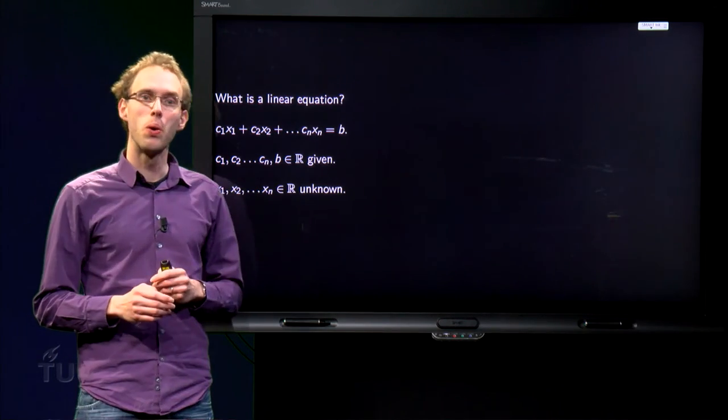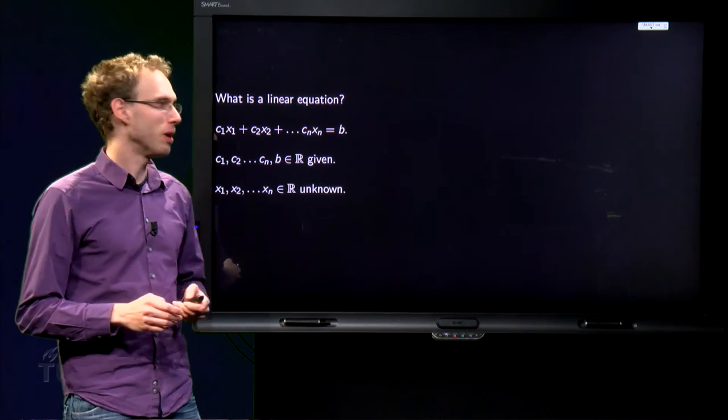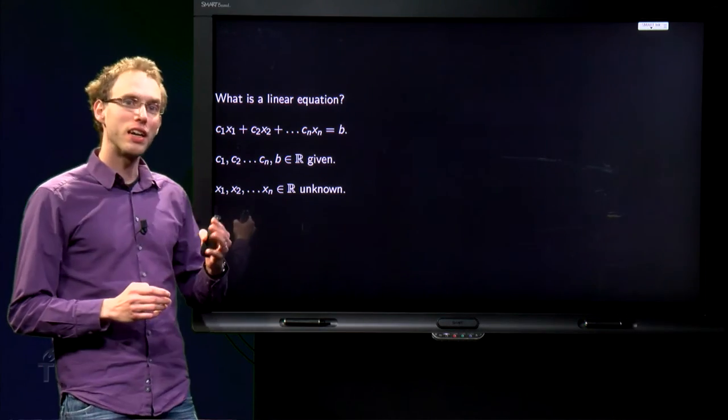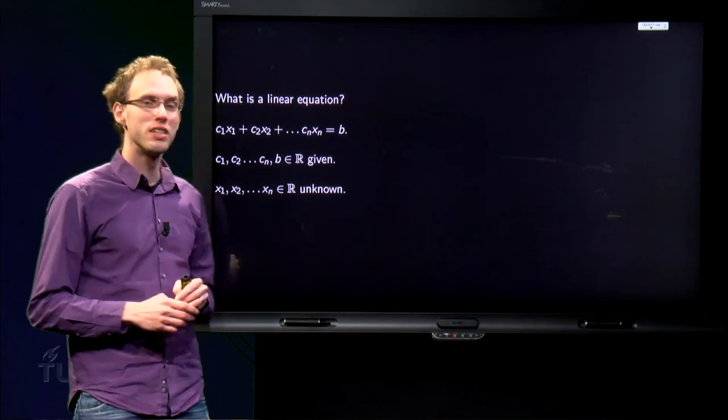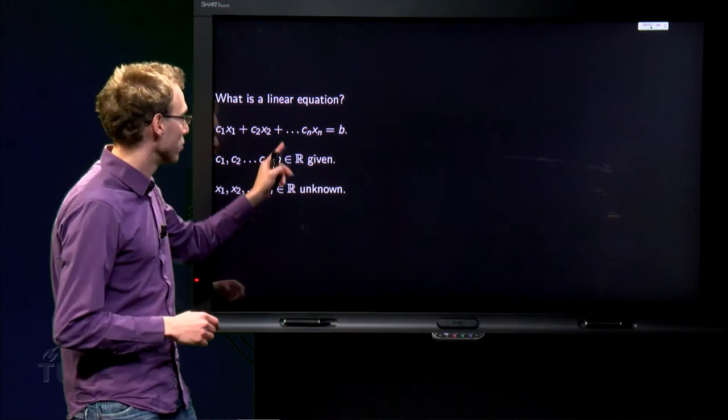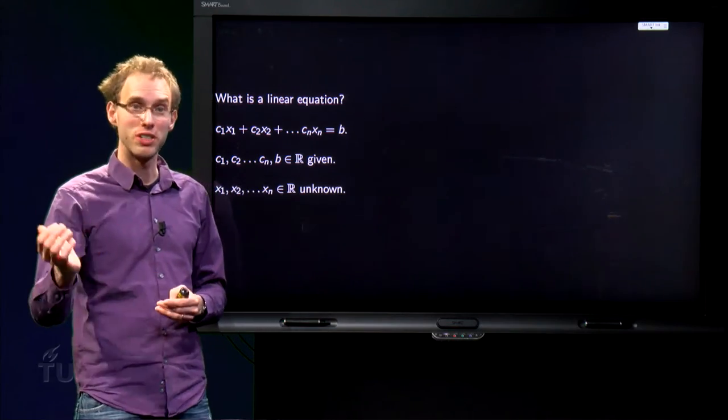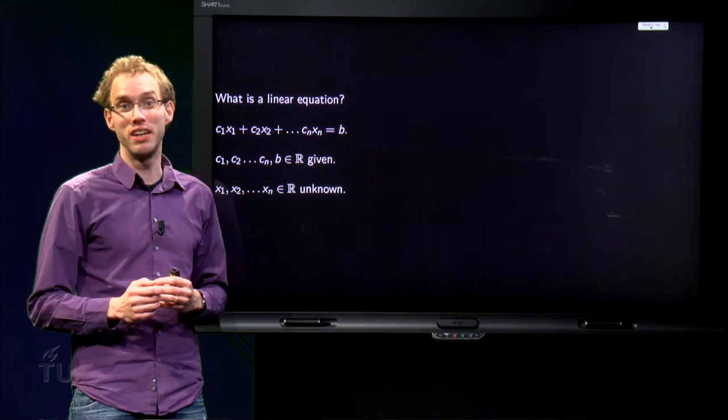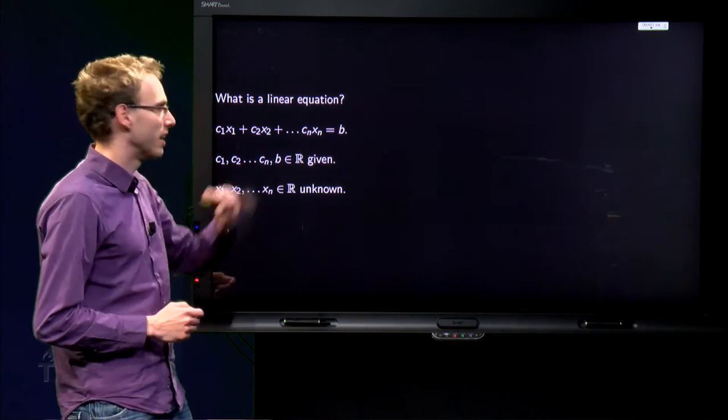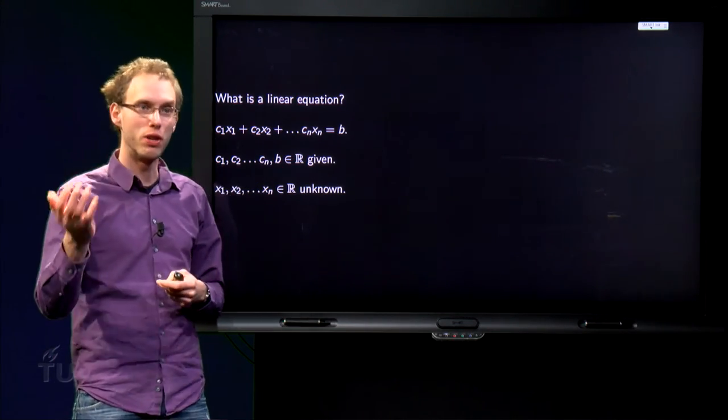So question is, what is a linear equation? A linear equation is the equation of the form C1 X1 up to Cn Xn equals B, where C1 up to Cn are constants given, some numbers given in R, and where B, the right hand side, is also some given number.